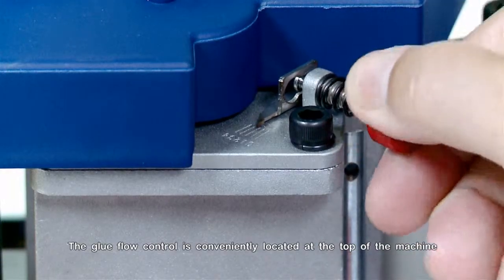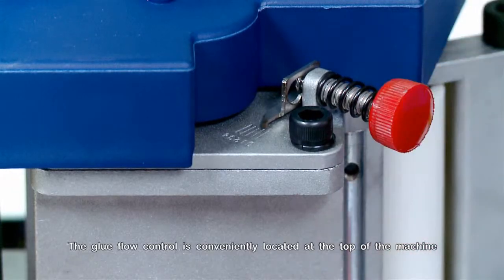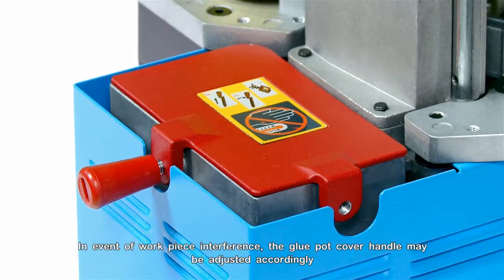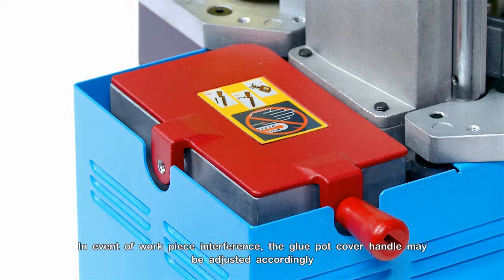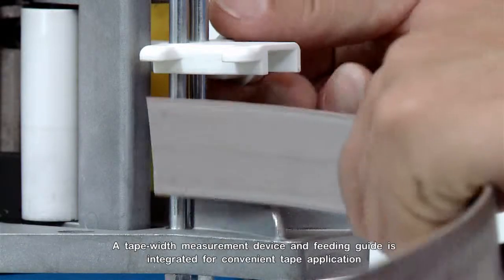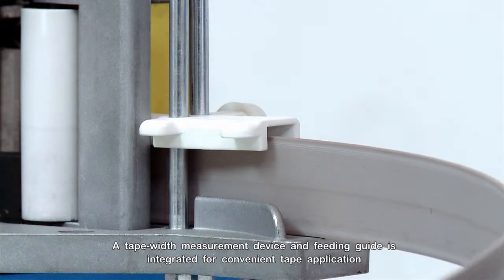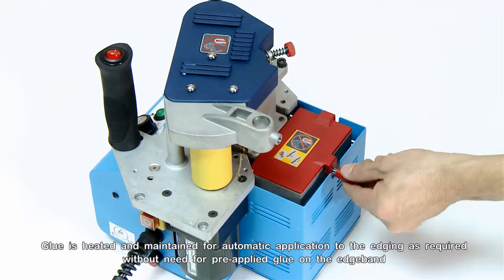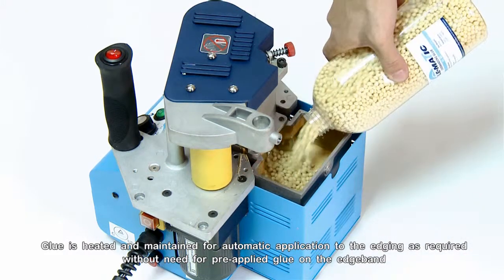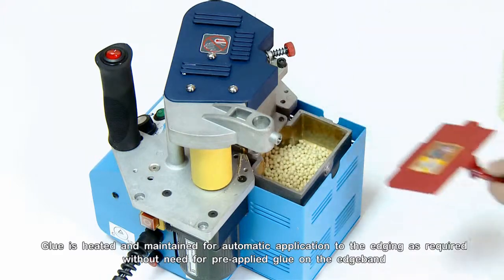The glue flow control is conveniently located at the top of the machine. In event of workpiece interference, the glue pot cover handle may be adjusted accordingly. A tape width measurement device and feeding guide is integrated for convenient tape application. Glue is heated and maintained for automatic application to the edging as required without need for pre-applied glue on the edge pad.